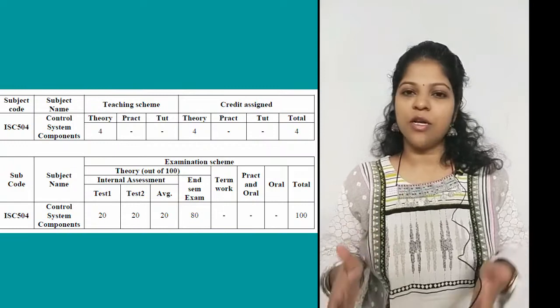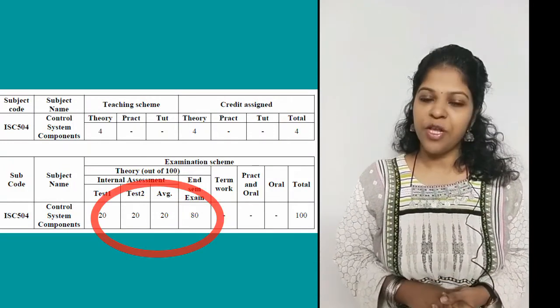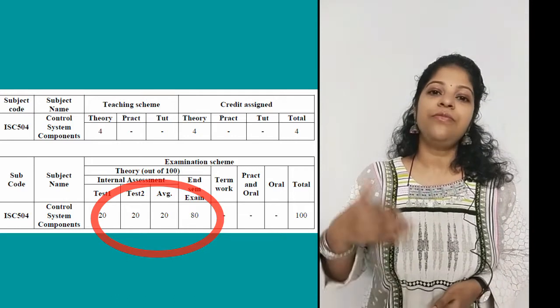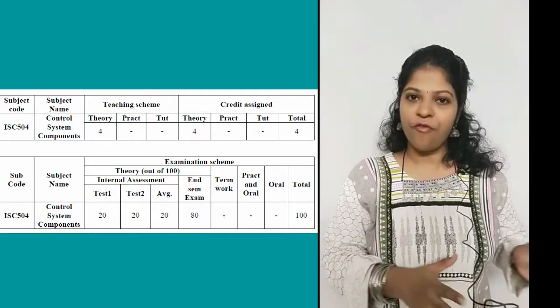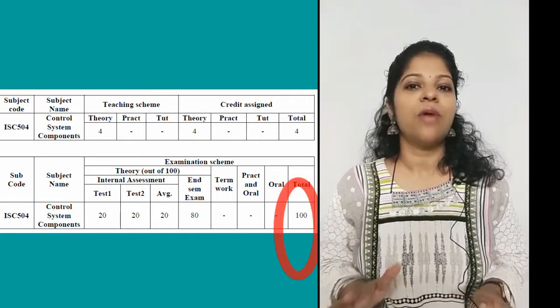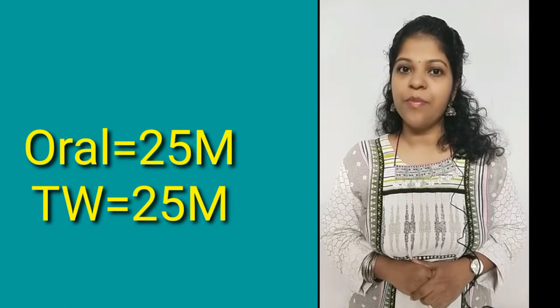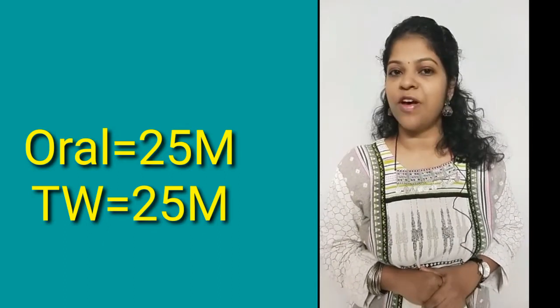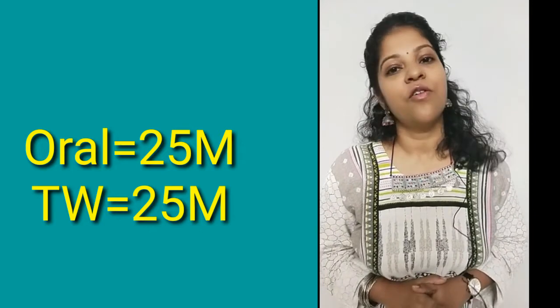There are two internal tests, and the internal exam is a total of 40 marks. The final exam is of 80 marks. The average of the two tests plus the 80-mark exam gives a total of 100 marks. The subject also includes oral and practical examinations — 25 marks oral and 25 marks practical — as part of this subject.